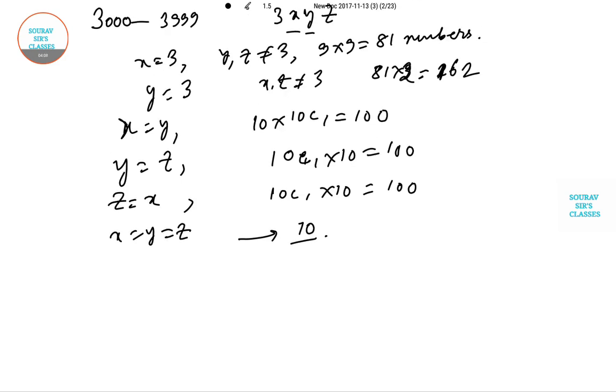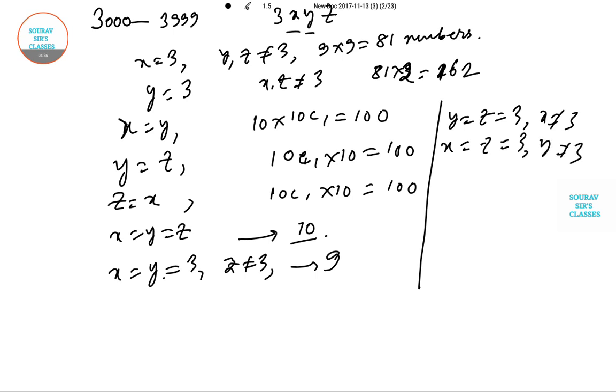Now if X equals Y equals Z, there are only 10 possible numbers. And if X equals Y equals 3 and Z not equal to 3, there are 9 possibilities. Similarly Y equals Z equals 3, X not equal to 3, and X equals Z equals 3, Y not equal to 3, so there are 9 each.